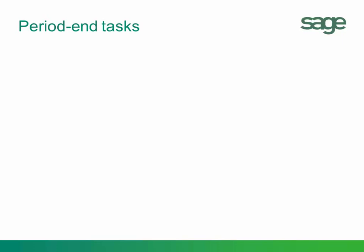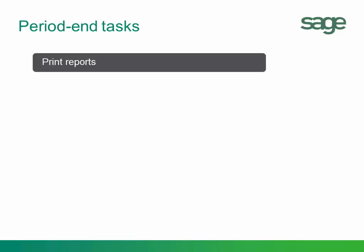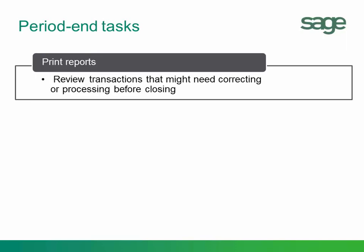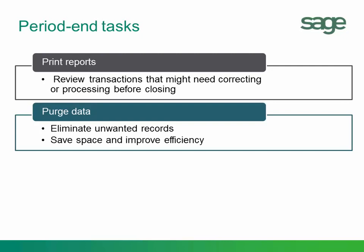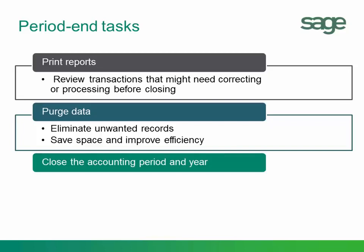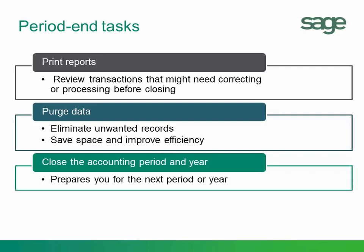At the end of the period, when you close the period, you perform three tasks. First, you print reports, which allows you to review any out-of-balance transactions, outstanding balances, inventory shortages — anything that needs processing before closing the period. Second, you purge your data, which eliminates unwanted records, potentially saving disk space and allowing your system to efficiently perform inquiries and process data. The last task is to close the period after everything is in balance, which prepares you for the next period and the next fiscal year.